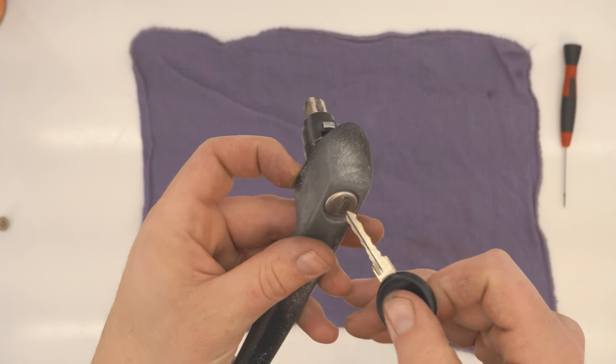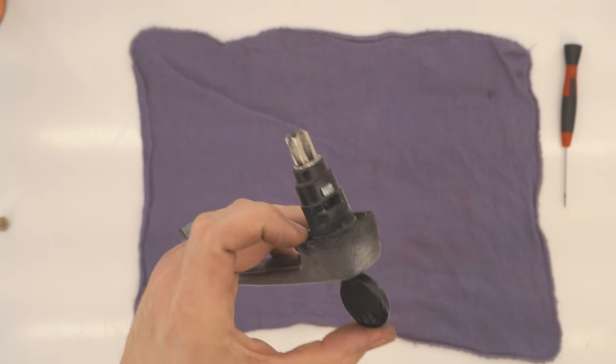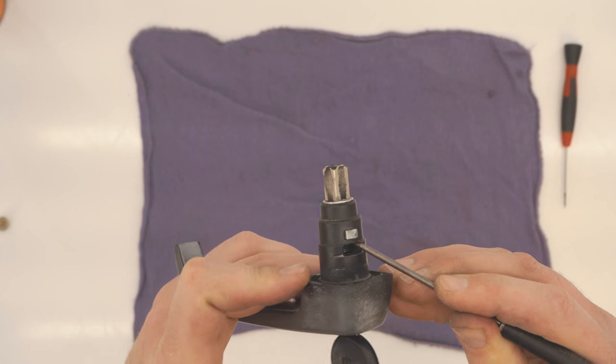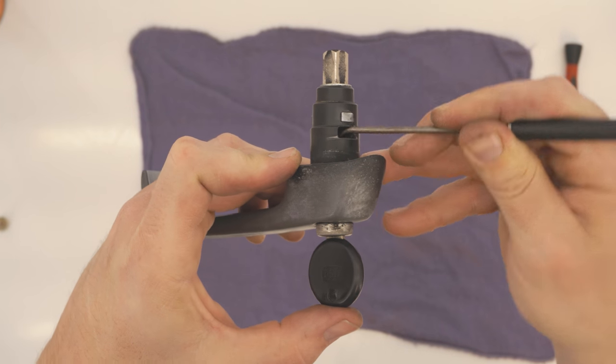So with our set screw out, you want to insert your key into the tumbler. Use a pick or a small flathead screwdriver and press the tumbler out of the handle.